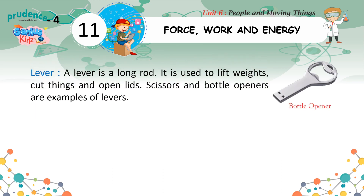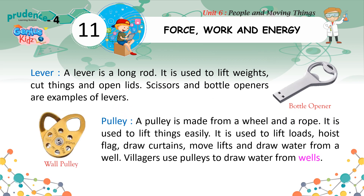Lever: A lever is a long rod. It is used to lift weights, cut things and open lids. Scissors and bottle openers are examples of levers. Pulley: A pulley is made from a wheel and a rope. It is used to lift things easily — to lift loads, hoist flags, draw curtains, move lifts and draw water from a well. Villagers use pulleys to draw water from wells.